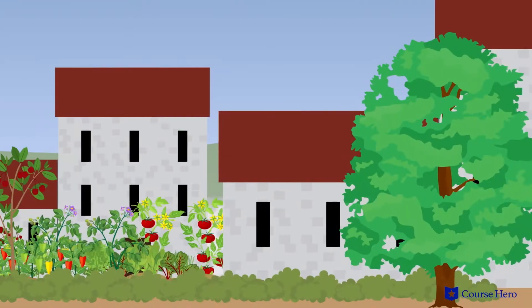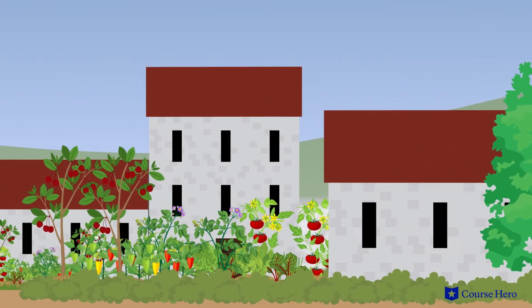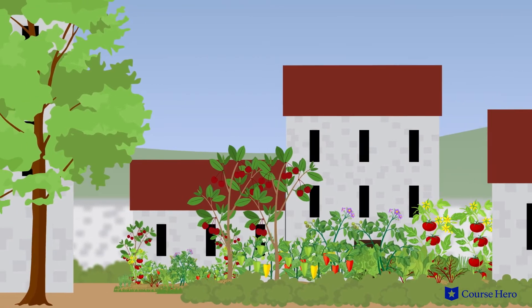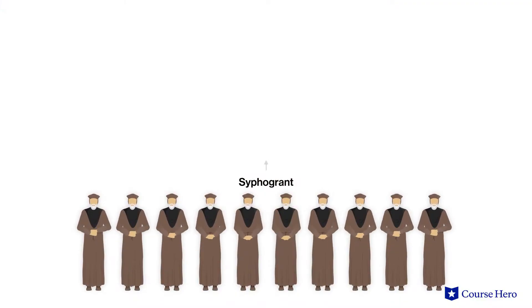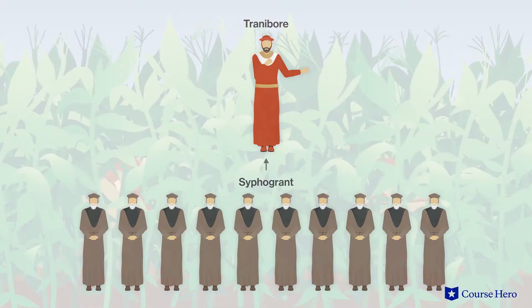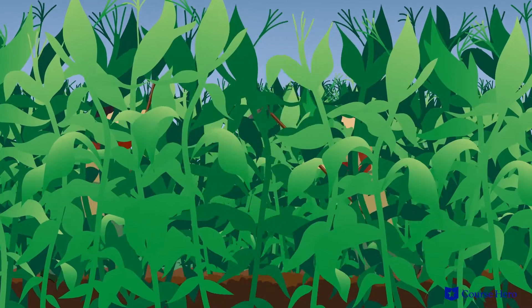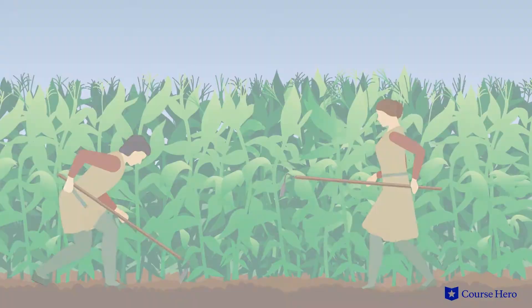Chapter Two explains the layout of Utopian cities and gardens, as well as shared property. Chapter Three describes the government and justice system of Utopia. Chapter Four covers Utopian work, which everyone does, and how there's no money, so no one is richer than anyone else.